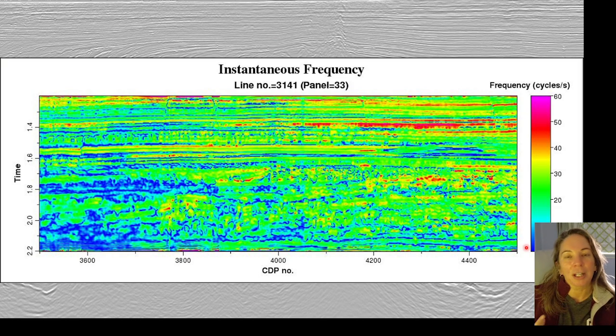So if we had hydrocarbons in this area, they might end up attenuating out some of the higher frequencies, and so those regions with hydrocarbons may look below them a little bit anomalously low, lower in frequency.